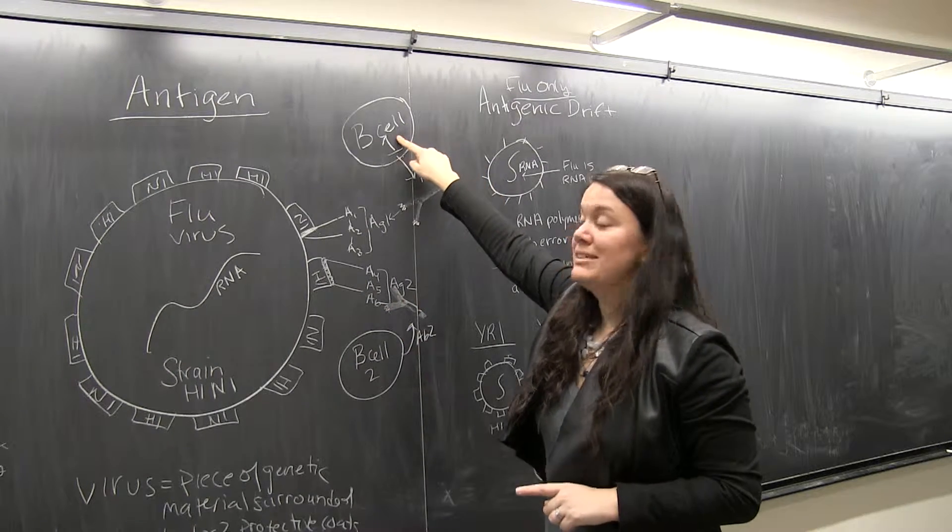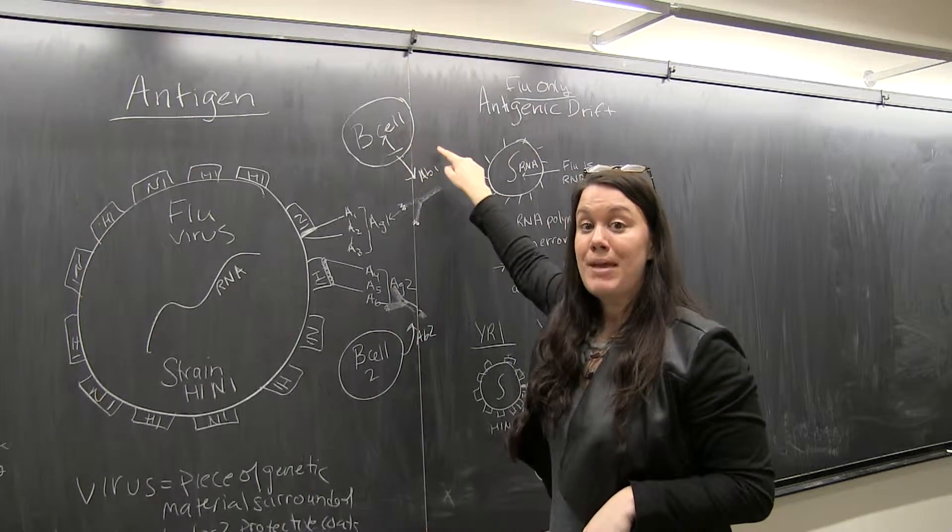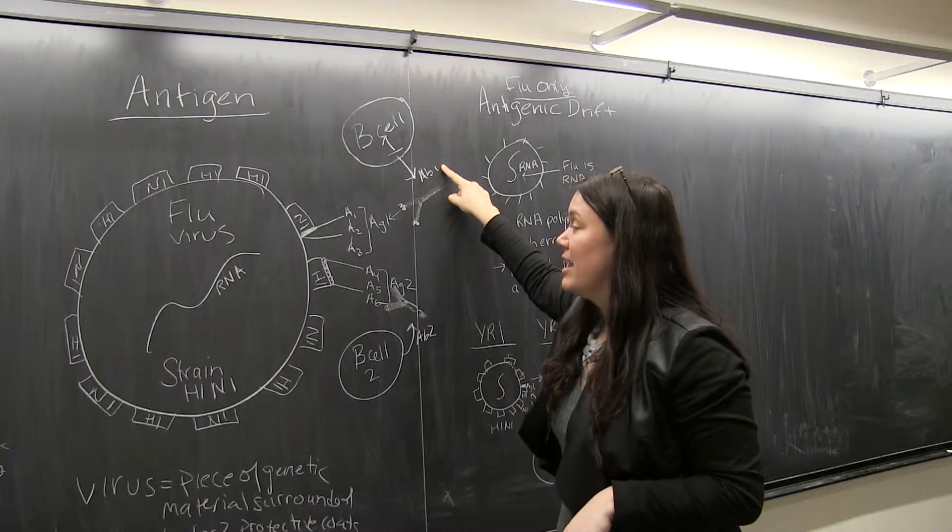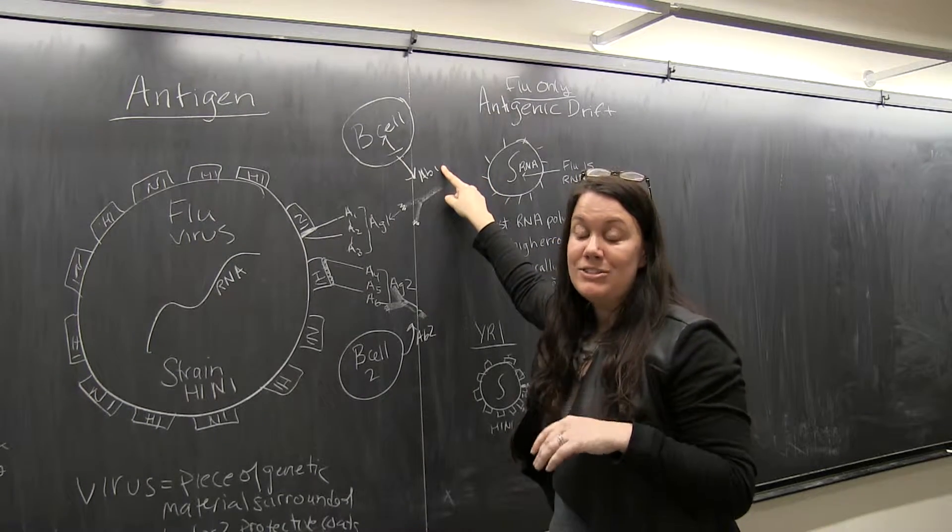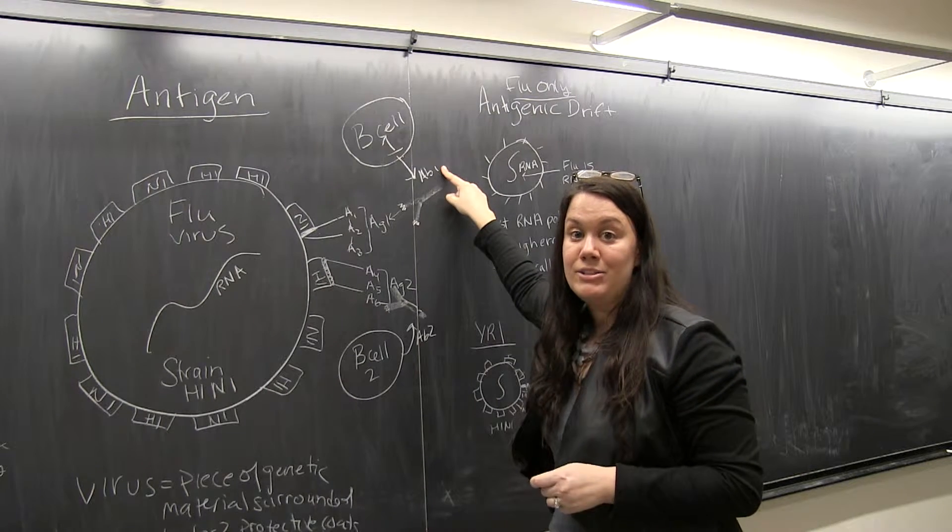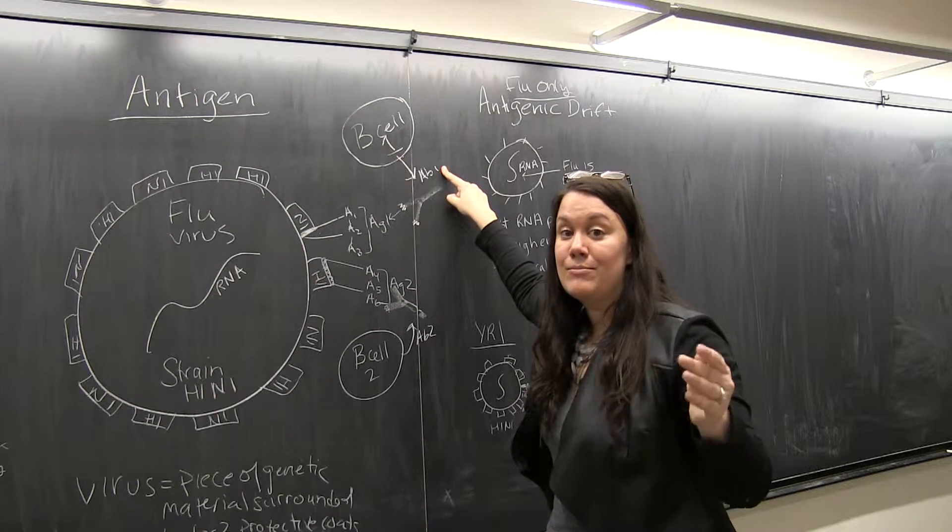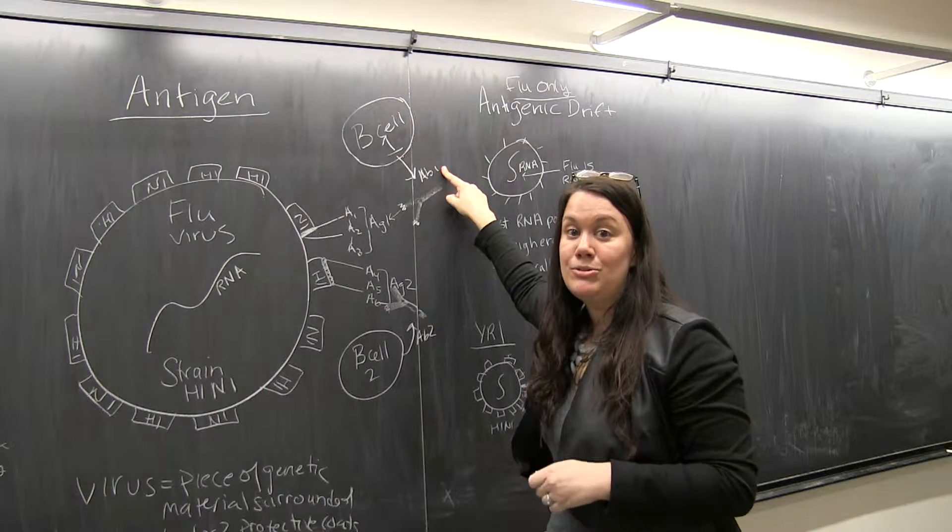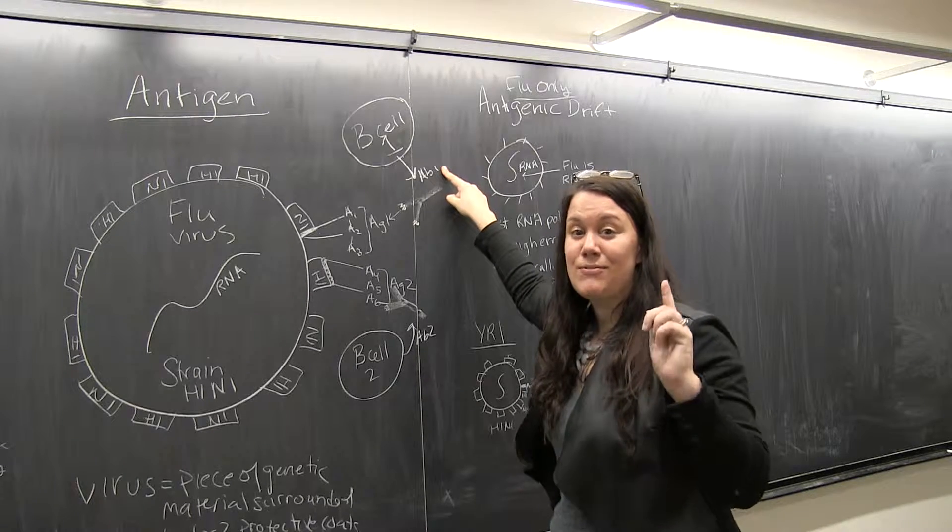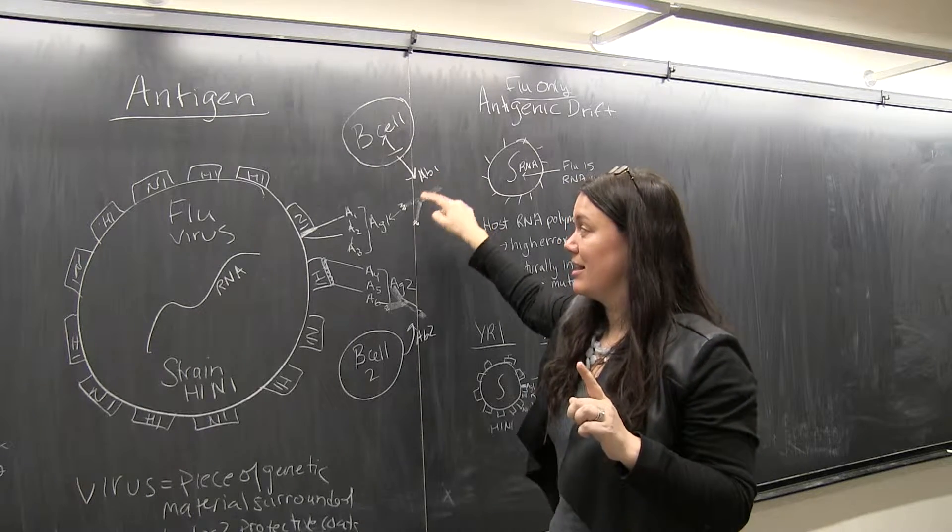So that's how I've drawn it here. B cell number one makes antibody number one, and this antibody is just roaming around in the bloodstream, in the lymph vessels, in the tissues looking for its very specific antigen.